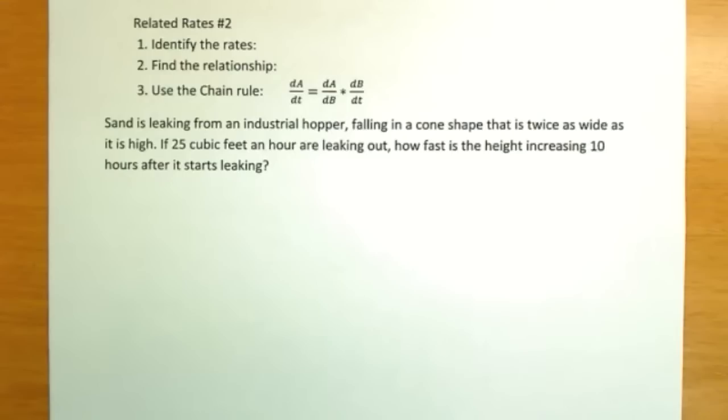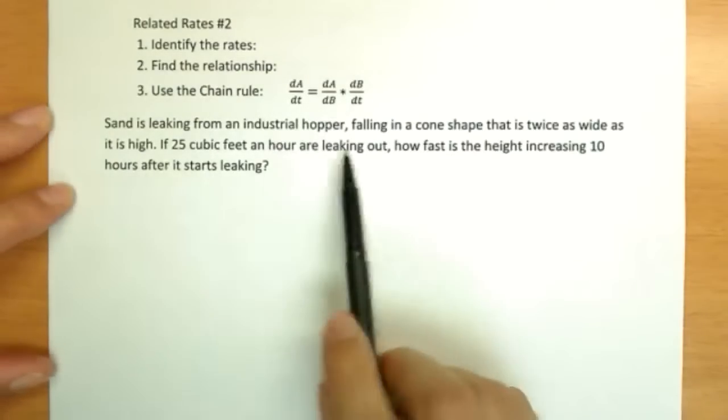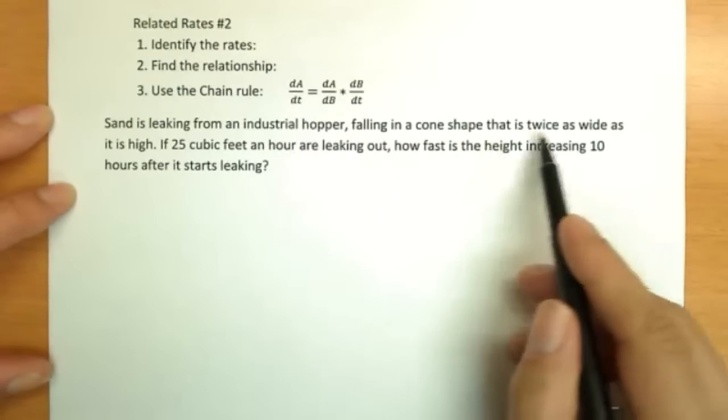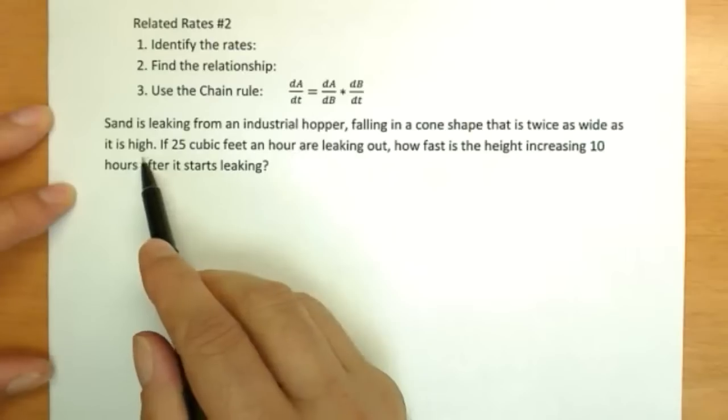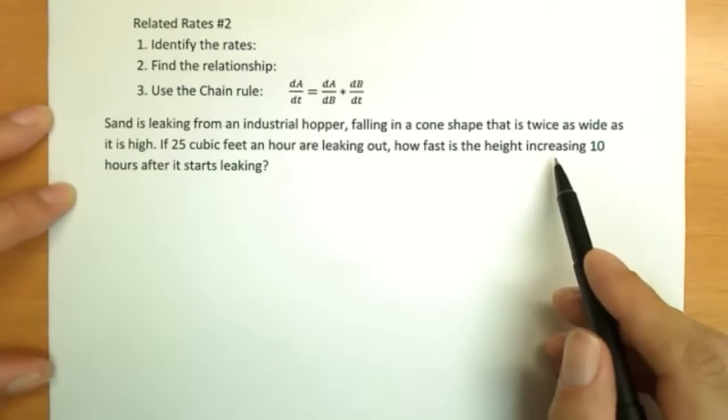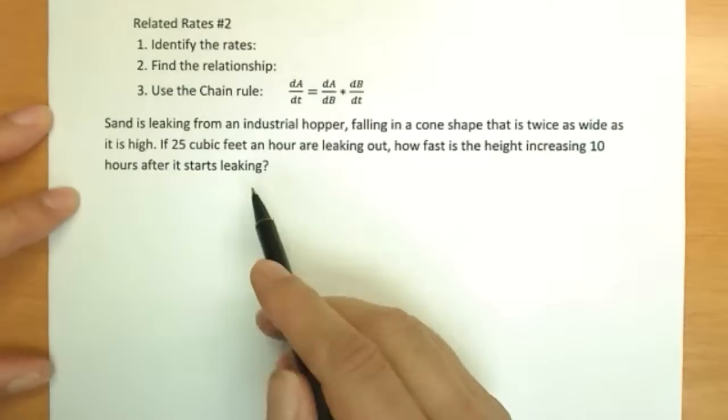Okay, for our second related rate problem, we're going to do this problem here. Sand is leaking from an industrial hopper, falling in a cone shape that is twice as wide as it is high. If 25 cubic feet an hour are leaking out, how fast is the height increasing 10 hours after it starts leaking?